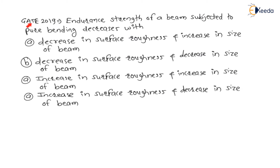The next question, also asked in GATE 2019 for fatigue loading, is: endurance strength of a beam subjected to pure bending decreases with — Option A: decrease in surface roughness and increase in size; Option B: decrease in surface roughness and decrease in size; Option C: increase in surface roughness and decrease in size; Option D: increase in surface roughness and increase in size.